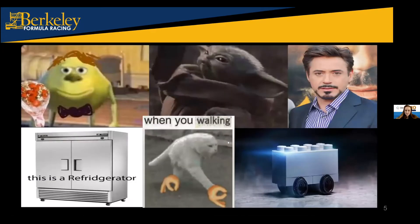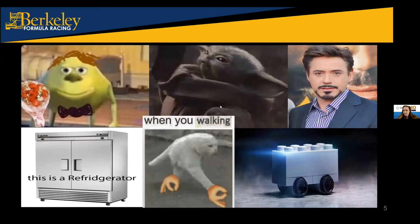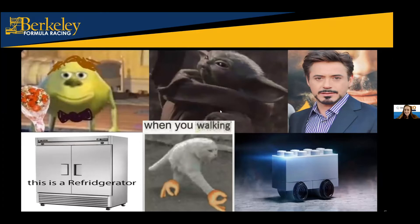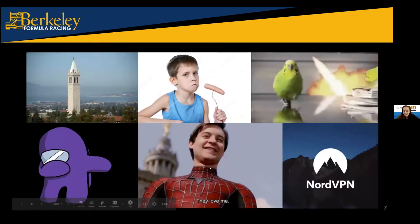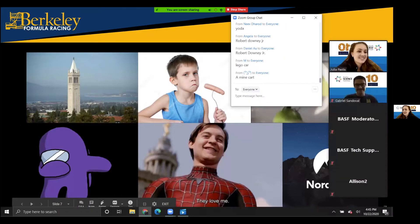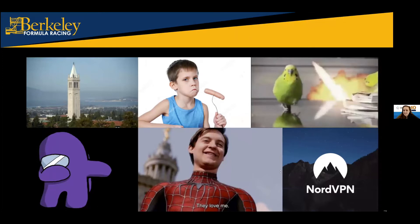On to the next slide — we have a couple of these. The race cars, Lego Cybertruck, Yoda — that's the only one I know. And there's Robert Downey Jr. I like the person whose name is a face — that is amazing. A mine cart — oh yeah, that makes sense. Last one: Tobey Maguire — is he Spider-Man? Among Us, and a kid with a sausage. They get less and less car-related as we go along.